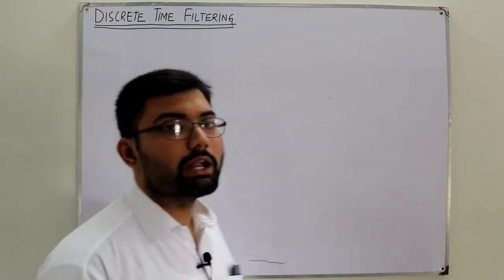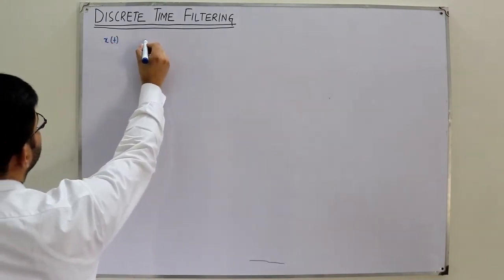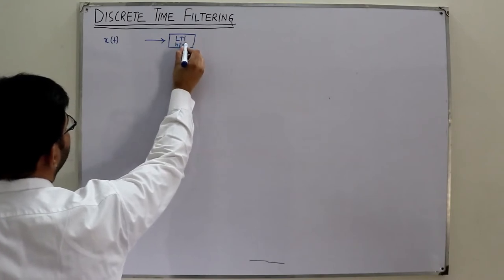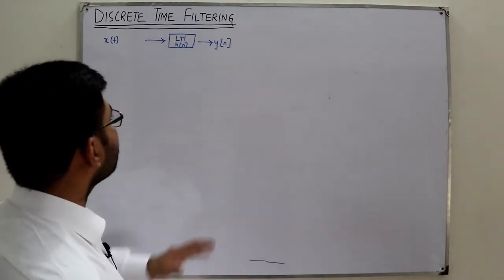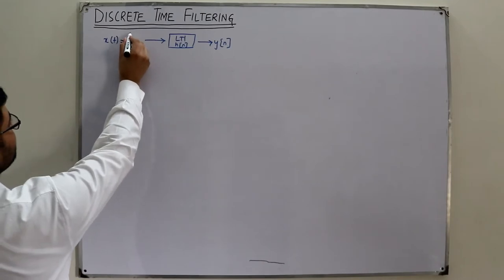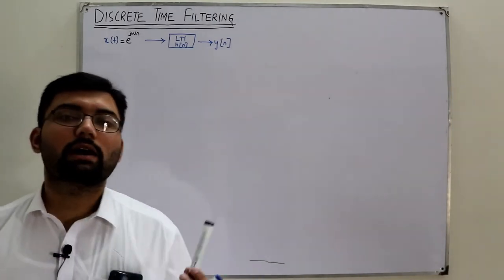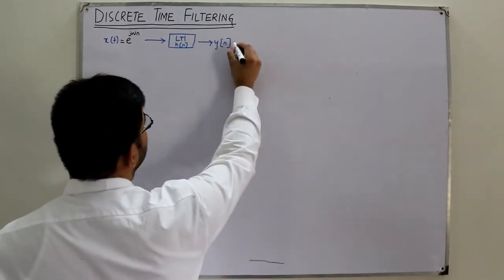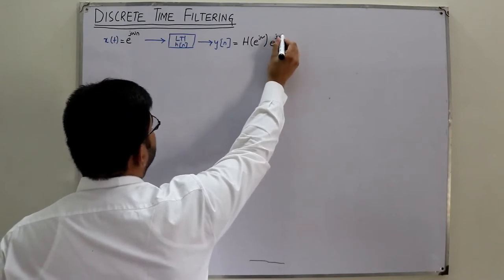That proper channel involves the Fourier tool and the LTI system. We have an input x(t) applied to an LTI system with impulse response h(n), giving output y(n) as the convolution of the input and impulse response. Specifically, if the input is a complex exponential e^(jωn), the eigenvalue property tells us the output is the same input multiplied by a scaling factor.